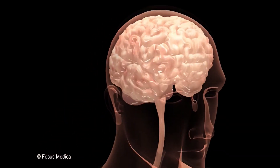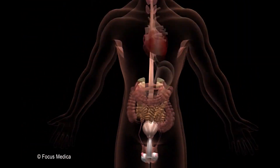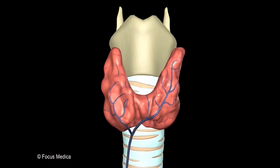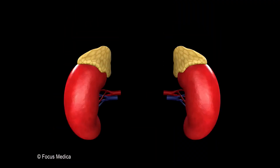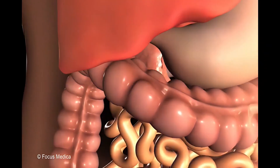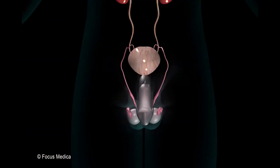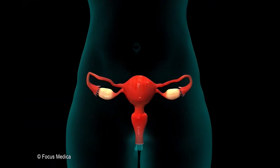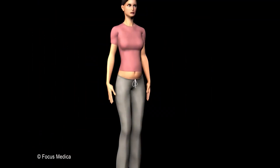The endocrine glands and tissues which constitute the human endocrine system are: the pituitary gland, thyroid gland, parathyroid glands, kidneys, adrenals, islets of Langerhans in the pancreas (alpha and beta cells), testes in males, ovaries in females, and placenta in females during pregnancy.